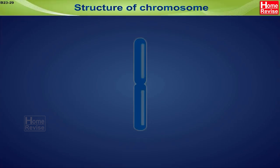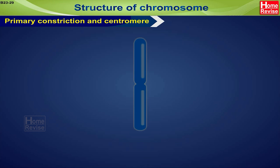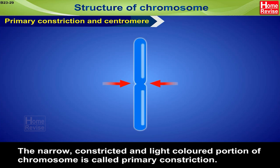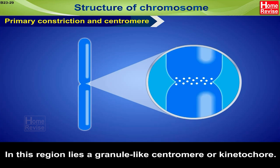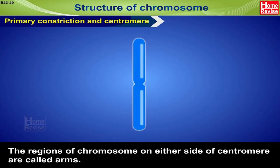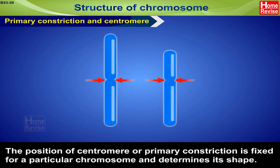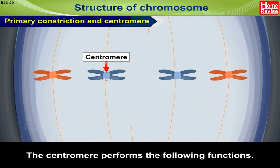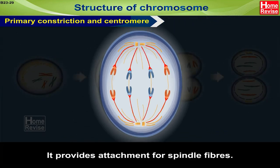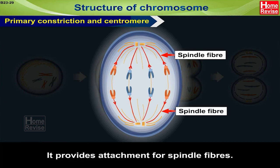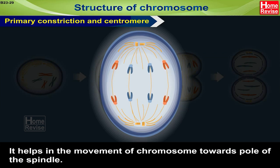Structure of chromosome — Primary constriction and centromere: The narrow, constricted, and light-colored portion of a chromosome is called the primary constriction. In this region lies a granule-like centromere, or kinetochore. The regions of the chromosome on either side of the centromere are called arms. The position of the centromere is fixed for a particular chromosome and determines its shape. The centromere performs the following functions: it determines the shape of the chromosome, provides attachment for spindle fibers, and helps in the movement of the chromosome towards the pole of the spindle.